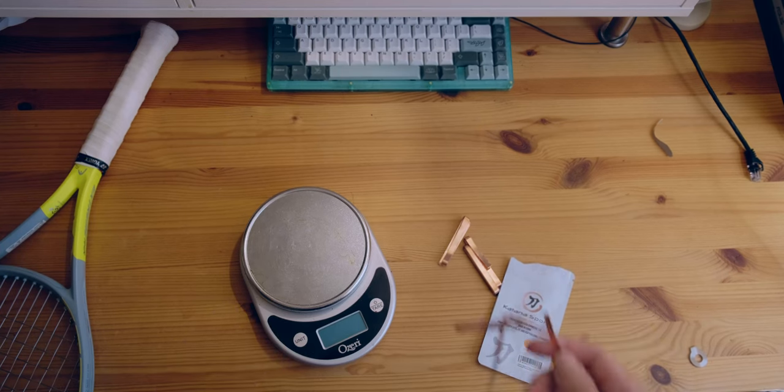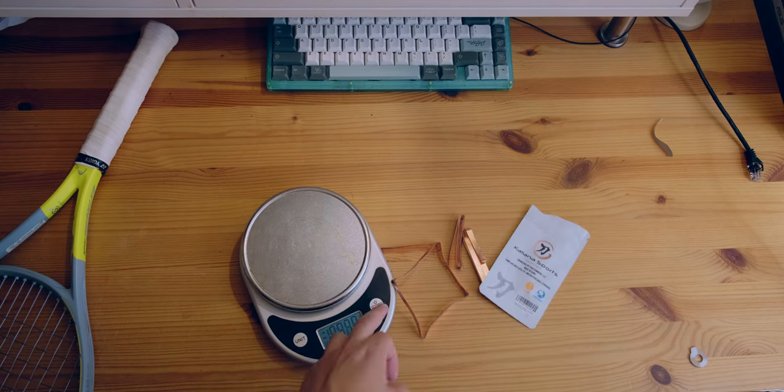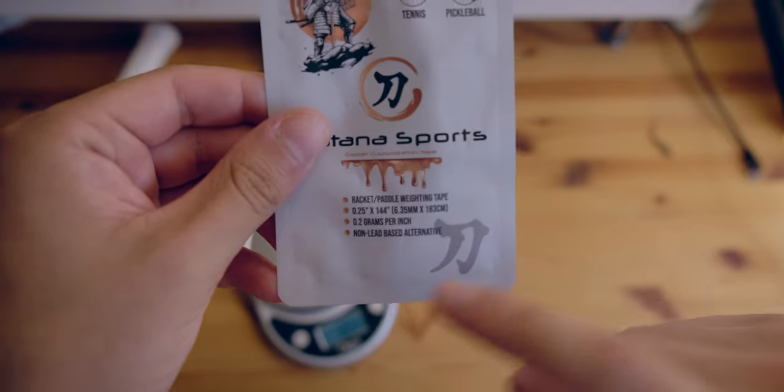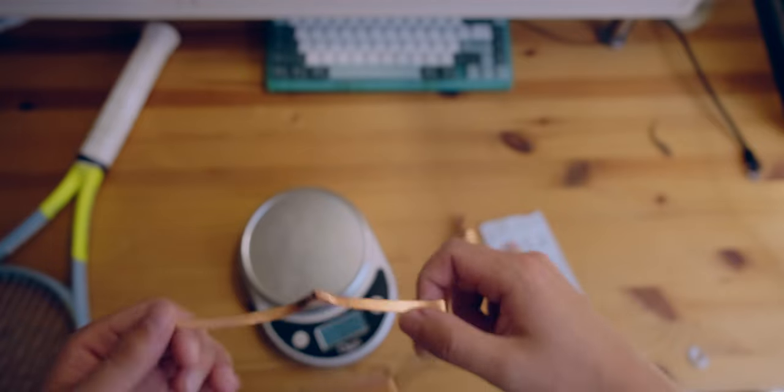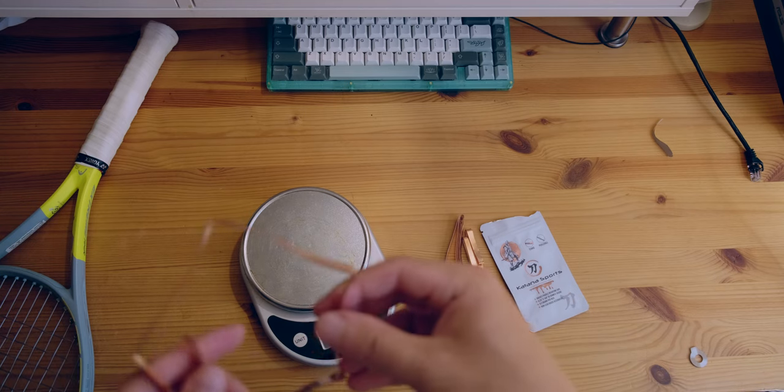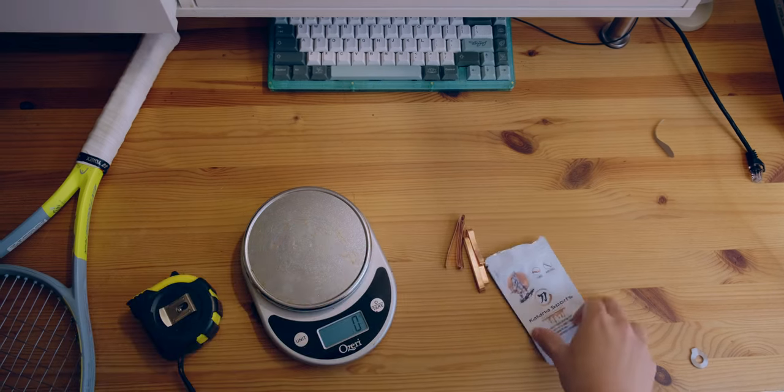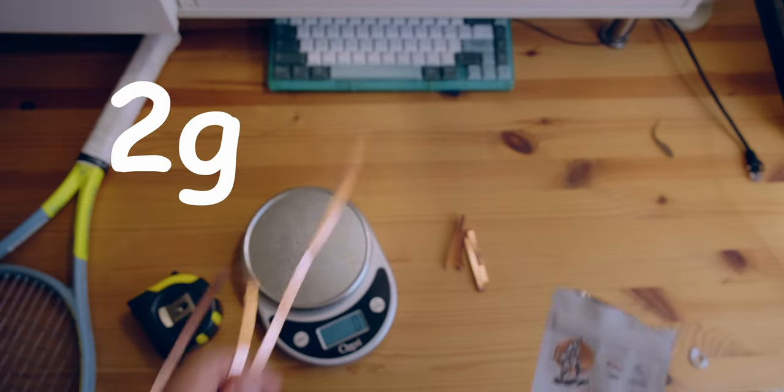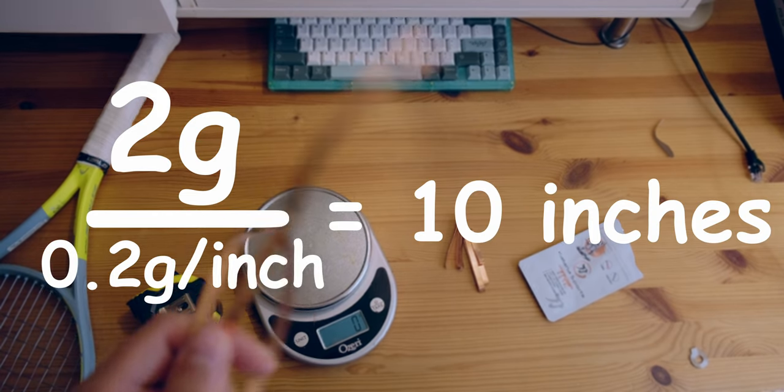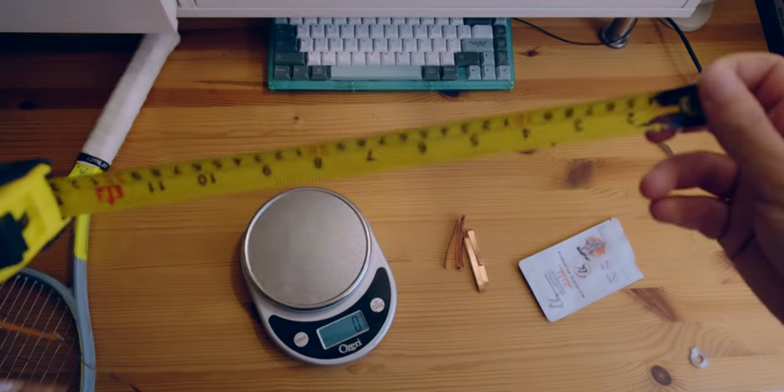So you're obviously going to want to grab your balancing tape, whether it be lead or this cool Katana Sport copper stuff, and weigh it. So we can see on the package here that it is 0.2 grams per inch balancing tape. So every inch is 0.2 grams. I typically like to start with 2 gram increments. I find 1 gram not super noticeable. 2 grams is almost always noticeable, but never overboard. So we know that if we want to add 2 grams of copper tape and the copper tape is 0.2 grams per inch, we need to add 10 inches of copper tape.